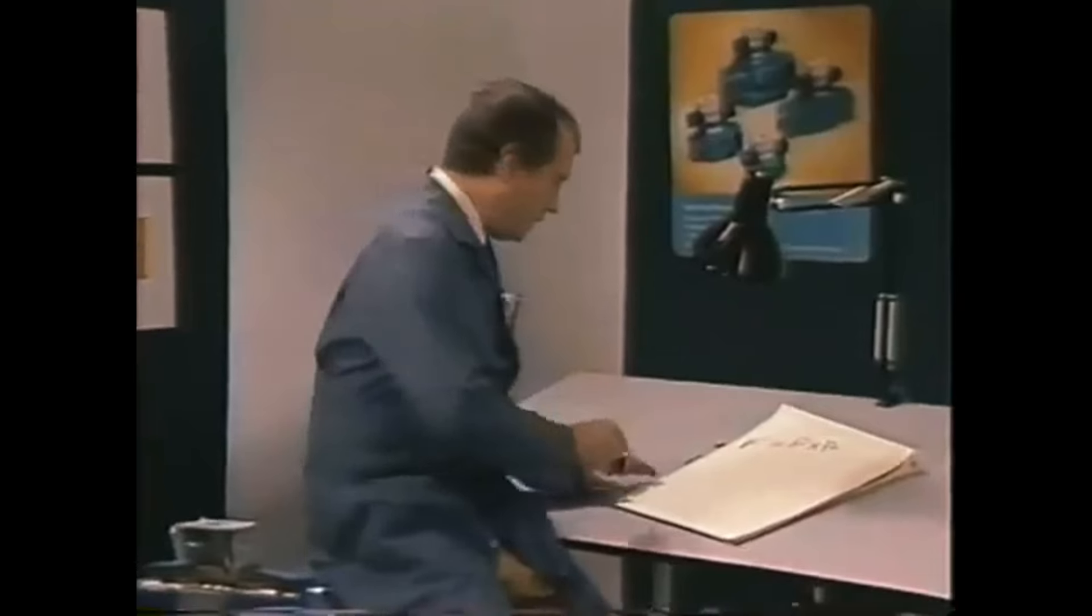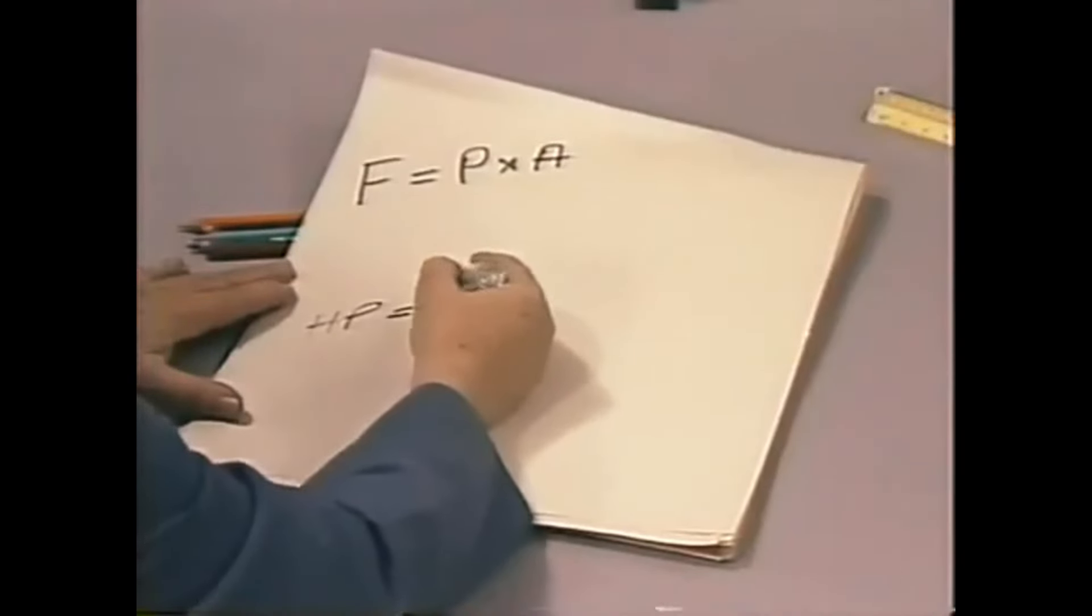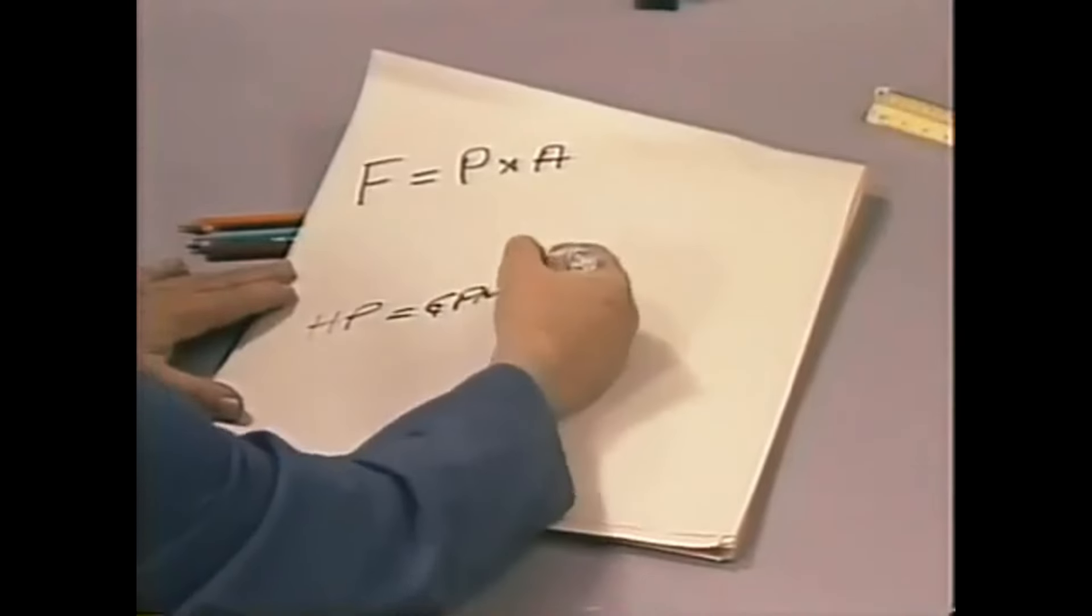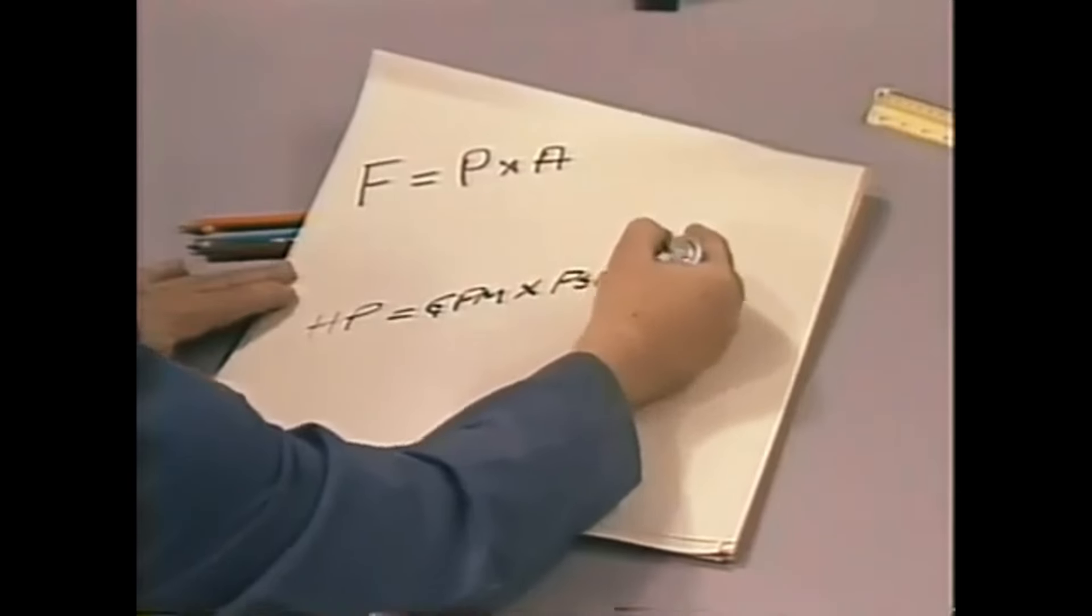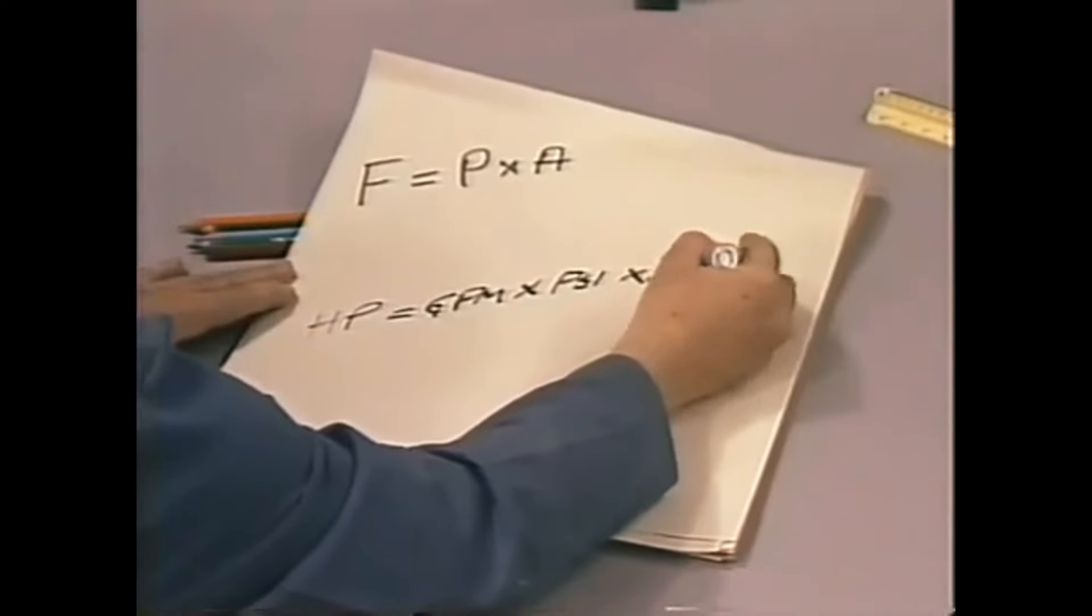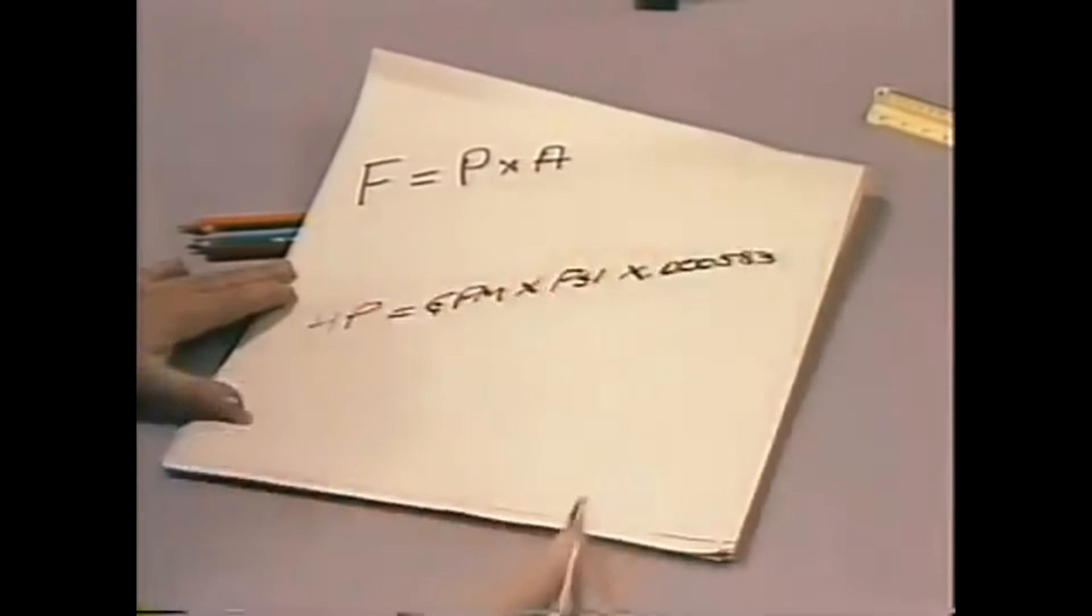Horsepower equals gallons per minute times pounds per square inch times 0.000583. That 0.000583 is a constant. It's the horsepower required to move one gallon per minute at one pound per square inch.